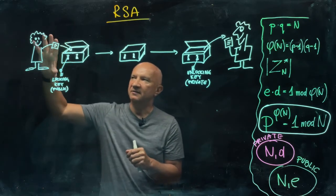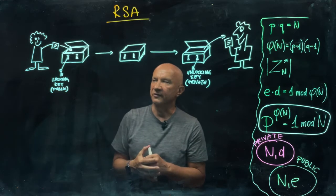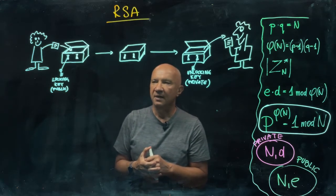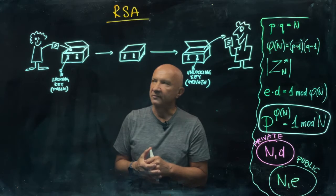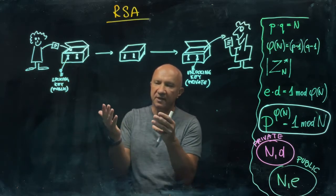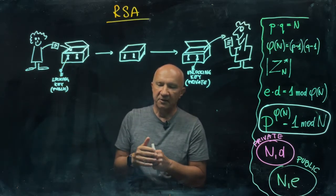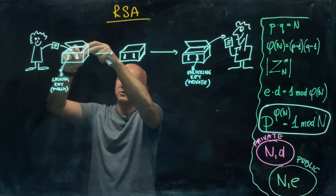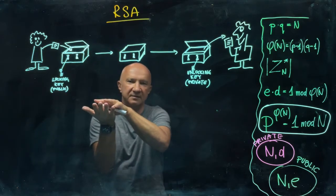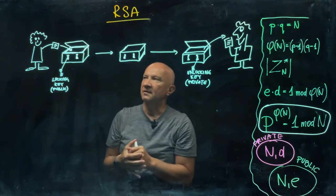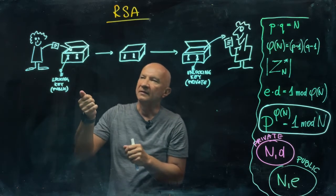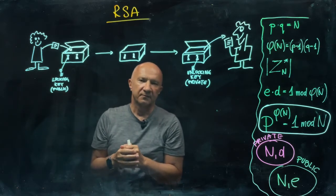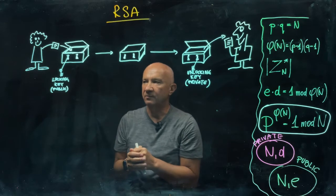So, here we are. Alice is one of the recipients of those safe boxes, and Alice wants to send a message to Bob. What she's going to do, she's going to write a message, she's going to put the message inside the box, put the lid down, so close the lid and lock the box with a locking key, with a public key.